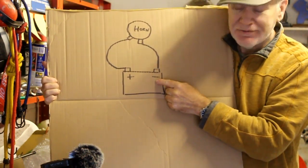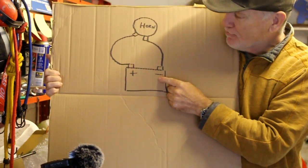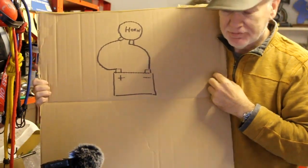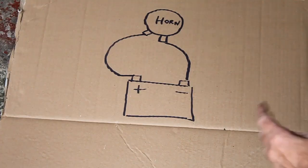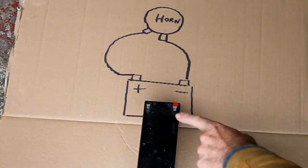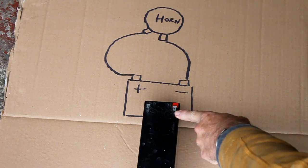And then you've got another wire going from another terminal on the horn back to the battery, in this case the negative terminal on the battery. So let's convert this theory into practice.